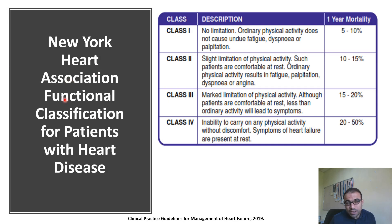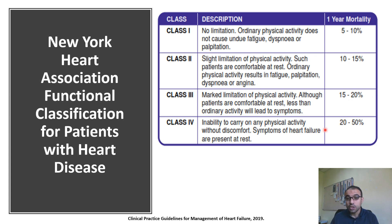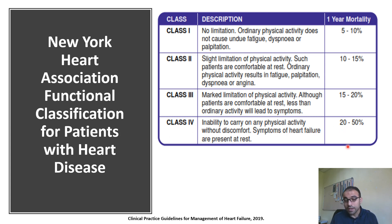One important functional classification for patients with heart failure is based on how severely heart failure affects normal activity. We have the New York Heart Association classification, class 1 to 4, according to the degree of limitation and mortality in one year. In class 4, where the heart is no longer able to support the body to perform any physical activity, the mortality rate can be up to 50%.